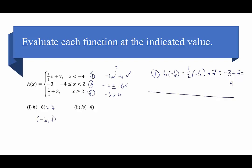For h of negative 4: piece 1 requires x to be less than negative 4, which is not true for negative 4. However, negative 4 is in the domain of piece 2, since negative 4 is less than or equal to negative 4, which is less than 2. So we plug negative 4 into piece 2, which equals negative 3. There's no x variable to substitute — it's a horizontal piece. So h of negative 4 equals negative 3, or the ordered pair negative 4 comma negative 3.